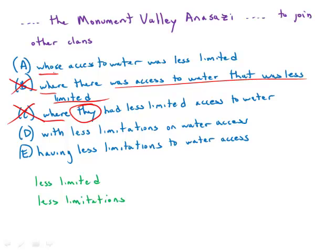Notice in D and E, we switch from less limited to less limitations. Less limited — that's adverb and verb, that's perfectly correct. Less limitations — that is grammatically incorrect. Why? Limitations is countable, and for countable nouns you don't use less; you have to use fewer — fewer limitations. So having fewer limitations to water access would be a perfect answer choice, but less limitations — both D and E are 100% wrong.